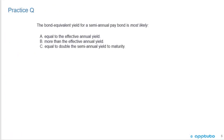Here's a nice practice problem with no math — it's testing your understanding of the concepts. The bond equivalent yield for a semi-annual pay bond is most likely: A, equal to the effective annual yield; B, more than the effective annual yield; or C, equal to double the semi-annual yield to maturity.